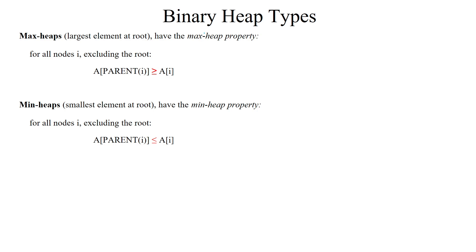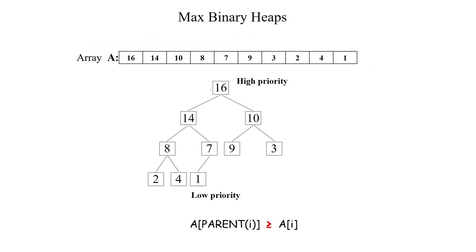Before entering into the priority queue, let's look at binary heap types. There are two binary heaps available. In the max heap, the node at the root has the highest priority, so the maximum number is at the root of the tree. Its children have lower priority values, arranged in descending order.